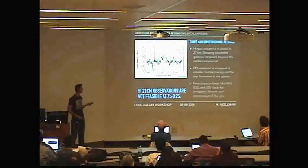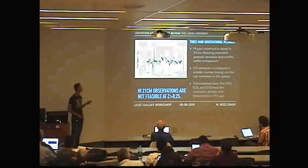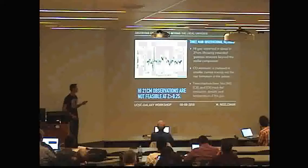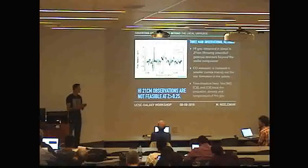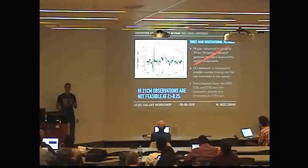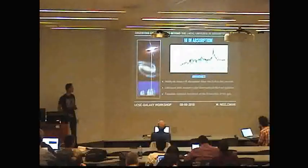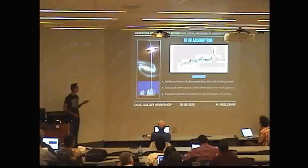When we go to high redshift, some of these methods we can't use. The bottom two — CO and fine structure lines — are fine at high redshift. But 21-centimeter is really limited to low redshift. The maximum you can reach is about redshift 0.24, and after that there's just no way of going higher. So we can't really use 21-centimeter to probe atomic gas at high redshift.